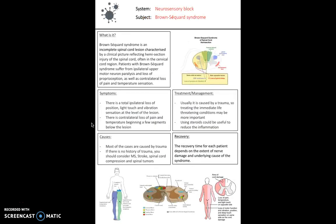We start with Brown-Séquard syndrome. This is a lesion in the spinal cord which results in weakness or paralysis on one side of the body and a loss of sensation on the opposite side of the body. For this reason, we refer to it as a hemicord lesion.